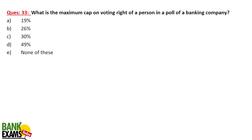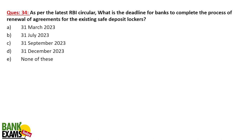What is the maximum cap on voting rights of a person in a poll of a banking company? One person cannot have voting rights of more than 26% in a banking company. As per the latest RBI circular, what is the deadline for banks to complete the process of renewal of agreements for existing safe deposit lockers? These agreements have to be completed by 31st December 2023.